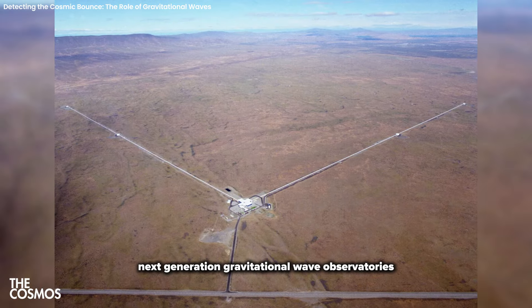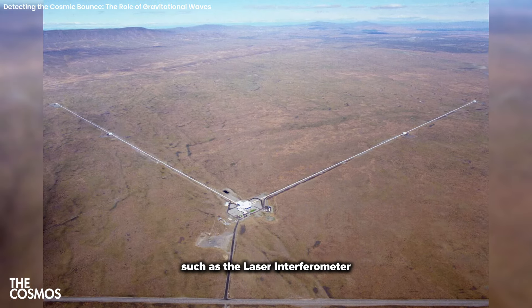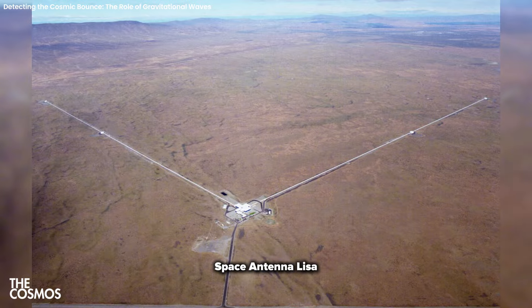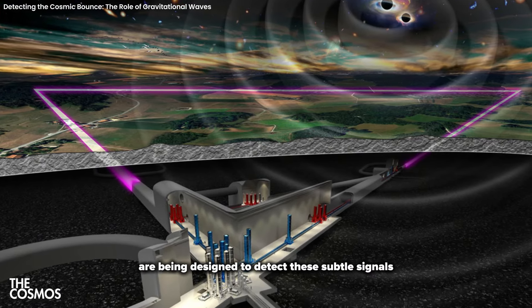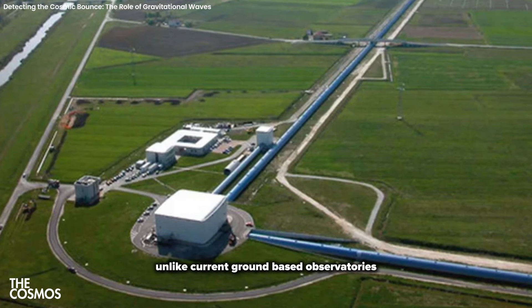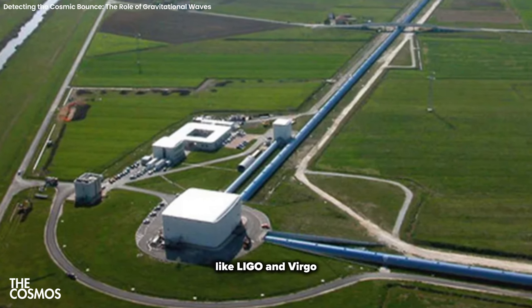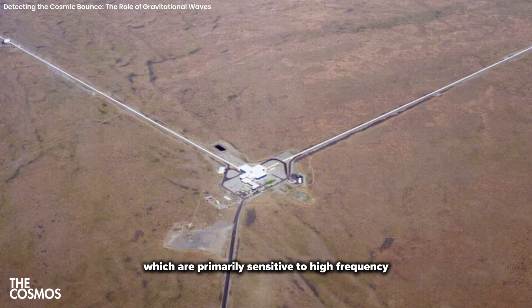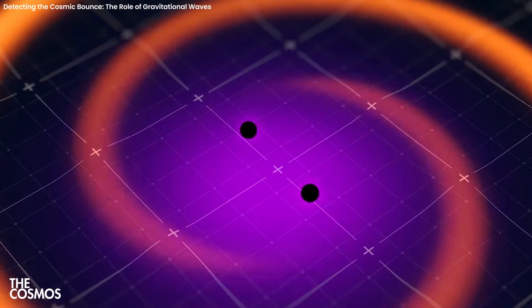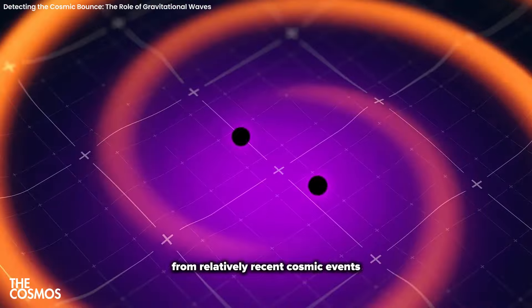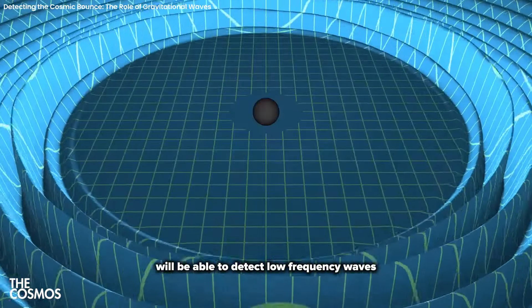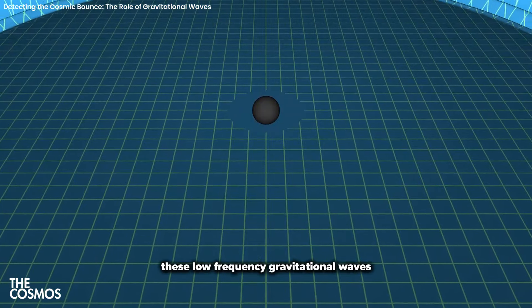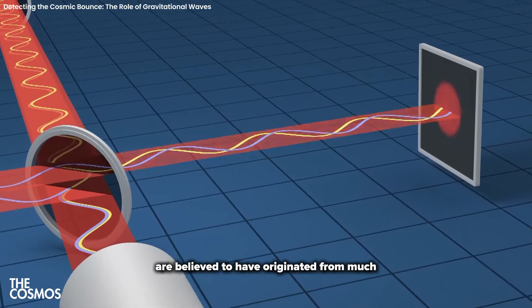Next-generation gravitational wave observatories, such as the Laser Interferometer Space Antenna, LISA, and the Einstein Telescope, are being designed to detect these subtle signals. Unlike current ground-based observatories like LIGO and Virgo, which are primarily sensitive to high-frequency gravitational waves from relatively recent cosmic events.